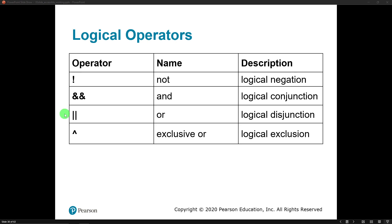And then we have the OR operator, which is the double pipes. The pipe key is above your Enter key on your keyboard — if you hold Shift above the backslash, there is the pipe key. So two vertical pipes are the OR operator. The OR operator is a logical disjunction, and we use that when we want to combine two statements and get a true value out if statement one is true, or if statement two is true, or if they're both true.